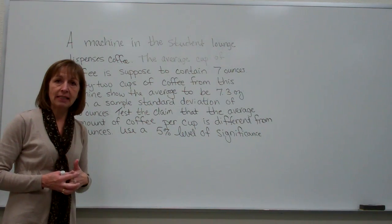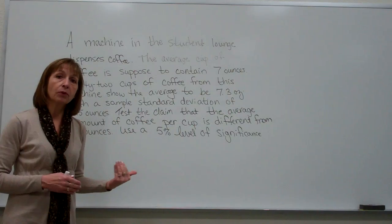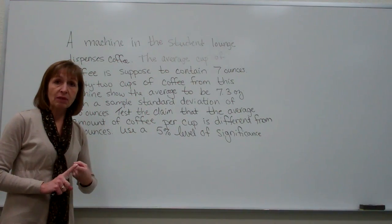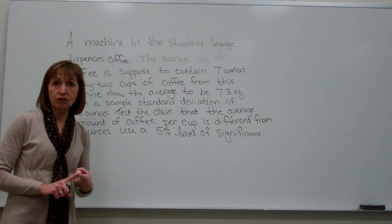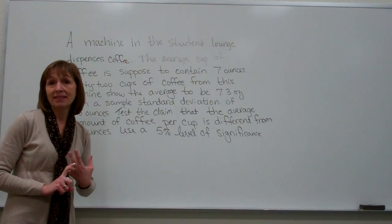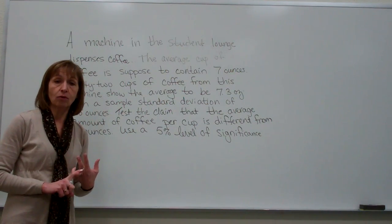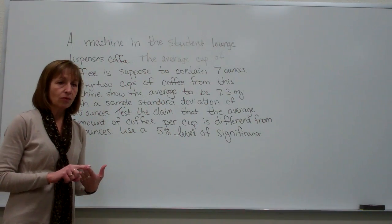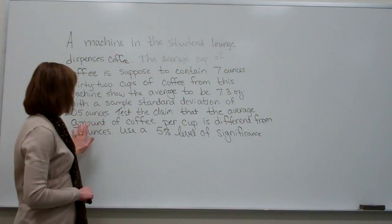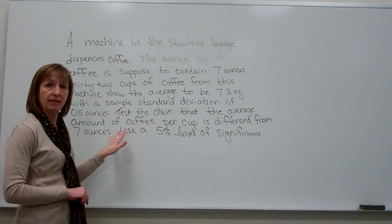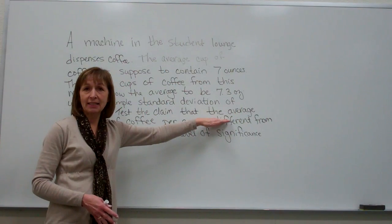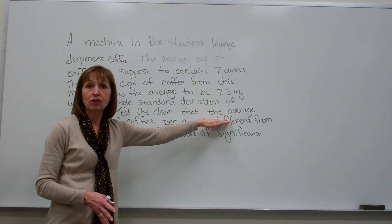The next determination is what parameter they want me to test. They might ask for a hypothesis test concerning a proportion, a mean, or a variance or standard deviation. Looking carefully, it says to test the claim about the average amount of coffee per cup — so testing the claim about the average means testing the claim about a population mean.